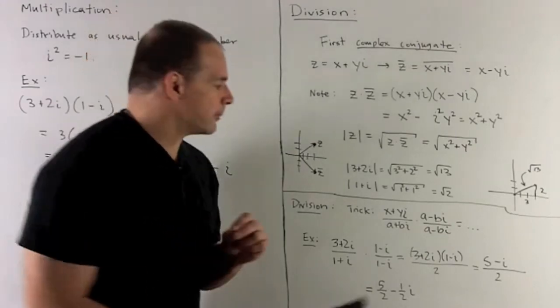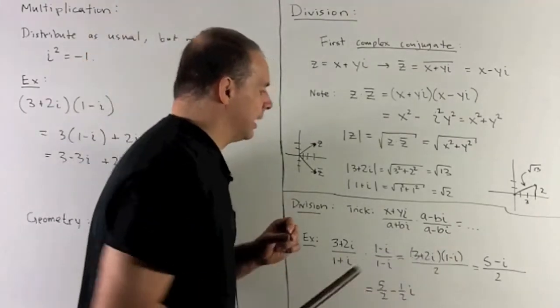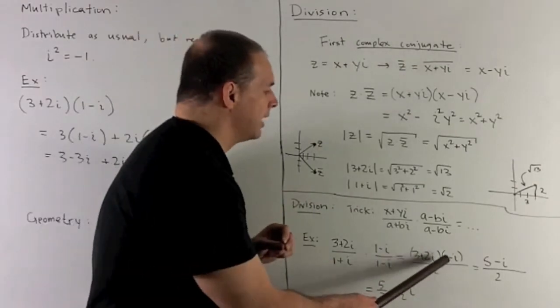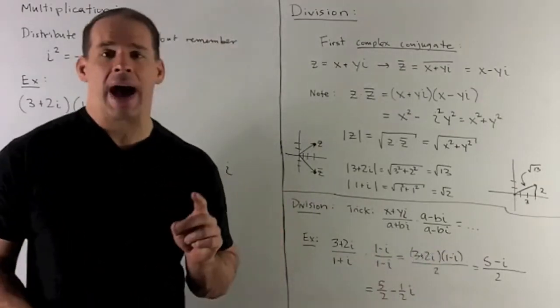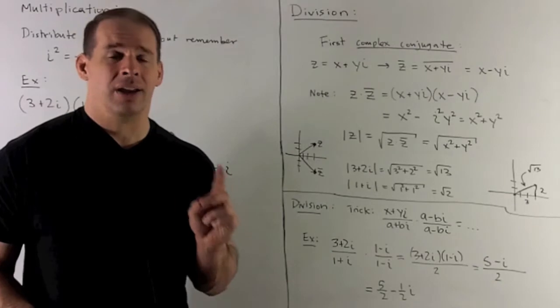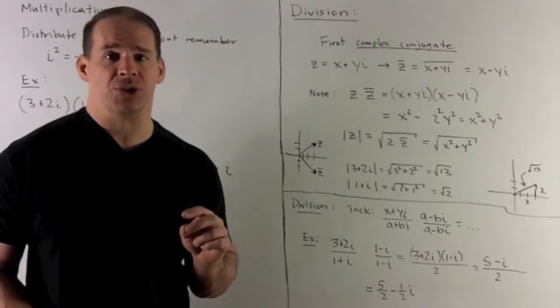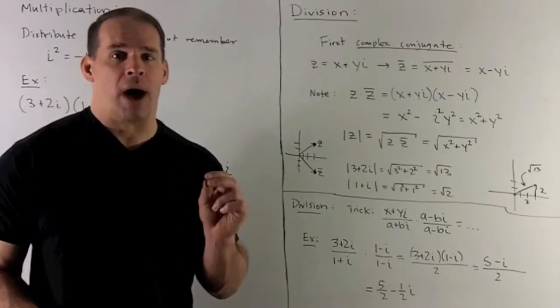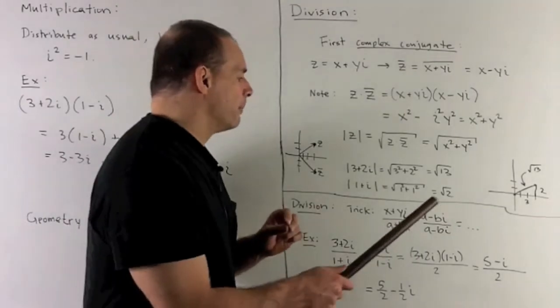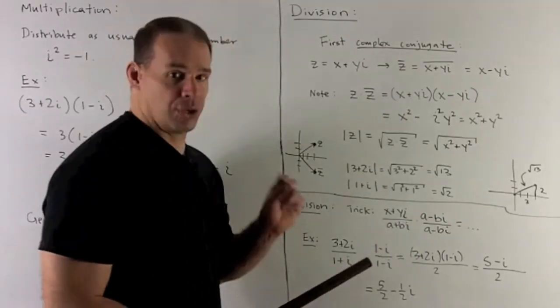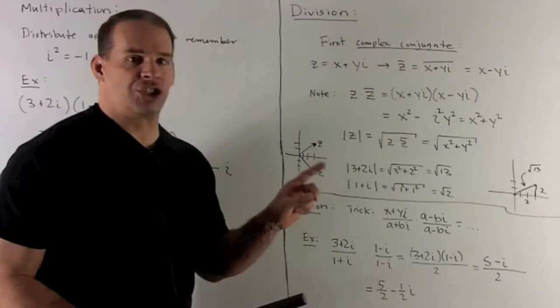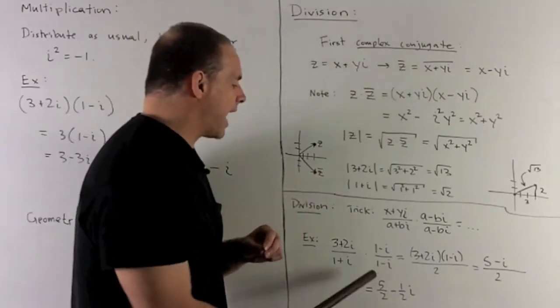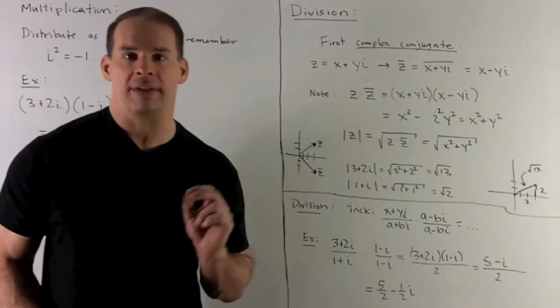So what do we get? 3 times this gives me 3 minus 3i. 2i times this term gives me 2i minus 2i squared. i squared is minus 1, so that turns to a plus 2. So I wind up getting 5 minus i over 2. That 2, I can divide in each term, and that leaves me with 5 halves minus 1 half i.